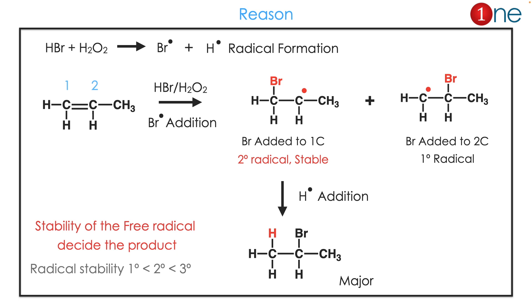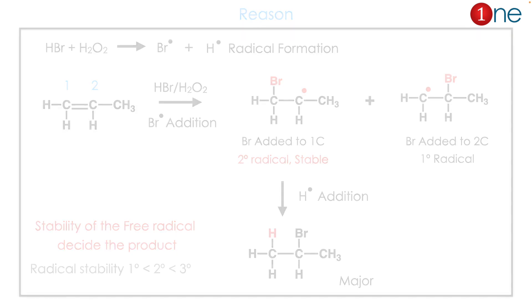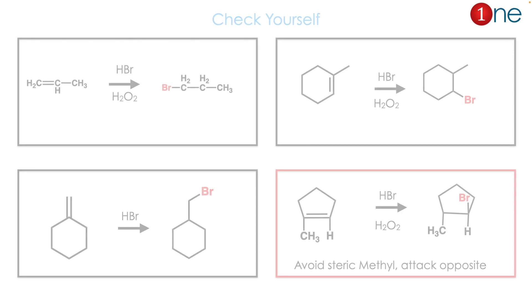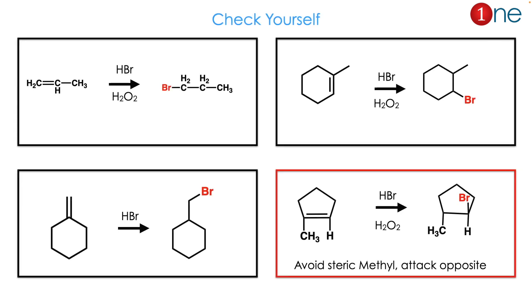The stability of the radical decides the product. Here I have given some examples for you to practice. Always just choose the carbon atom containing the greater number of hydrogen atoms and write the product — it is straightforward.